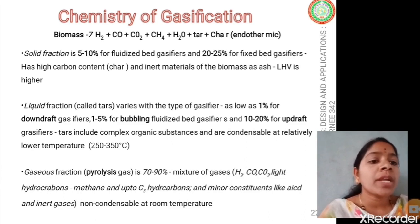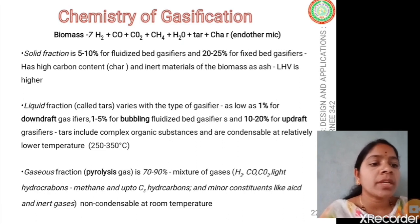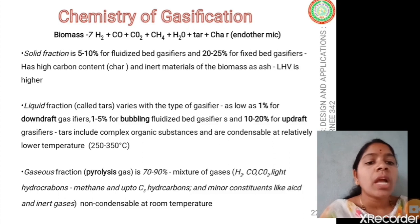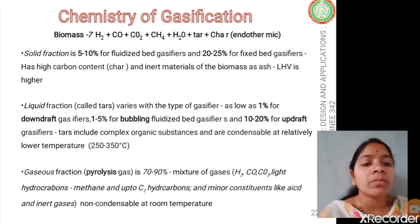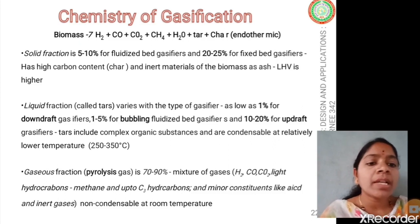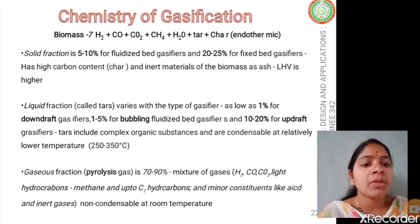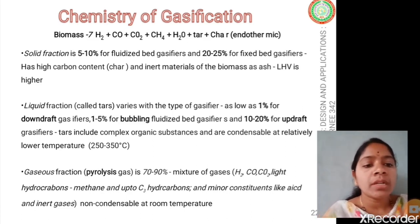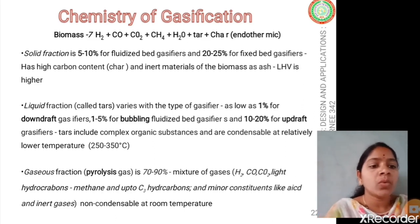The gas fraction constitutes 70 to 90% of the pyrolysis output mixture. It includes carbon monoxide, carbon dioxide, hydrogen, and light hydrocarbons — which may be alkenes — as well as sulfur compounds and methane. These are non-condensable at room temperature.